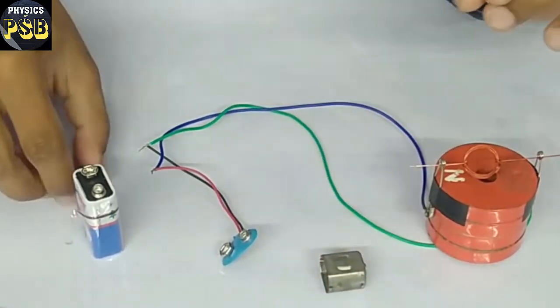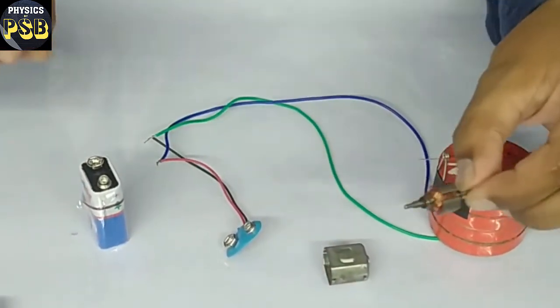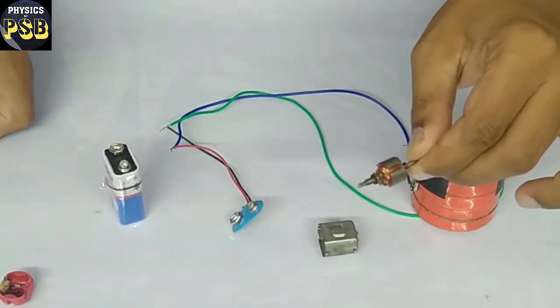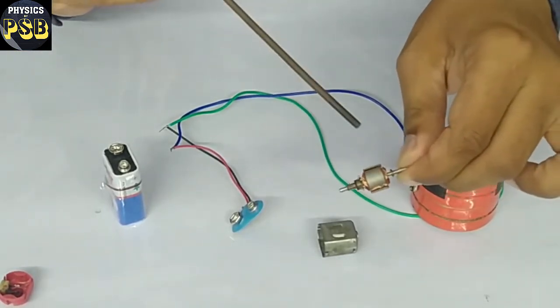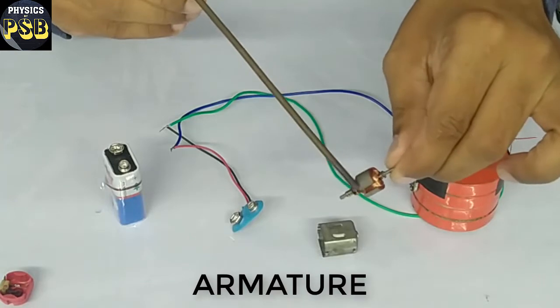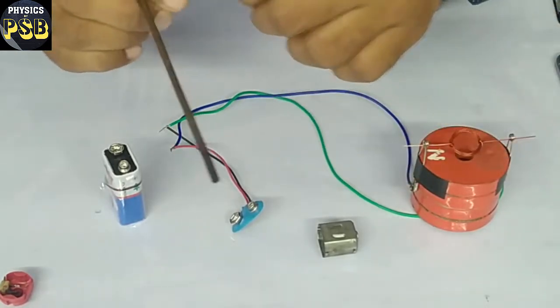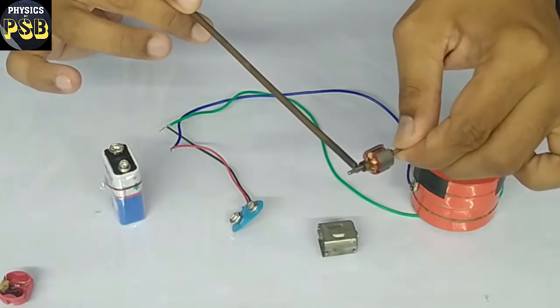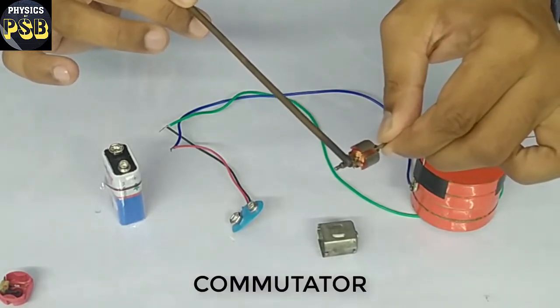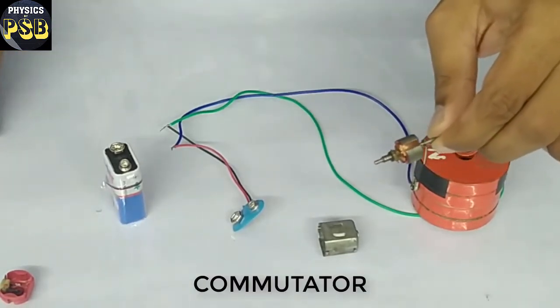Then there is an important part, the rotating part of a motor. It is known as a rotor. It consists of armature coil which is ultimately connected to this part called the commutator.